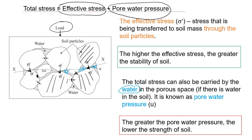This creates what we call pore water pressure. Pore water pressure is not desirable for engineering purposes because water has no bearing capacity and will actually decrease the bearing capacity of the soil mass. The greater the pore water pressure, the lower the strength of the soil.